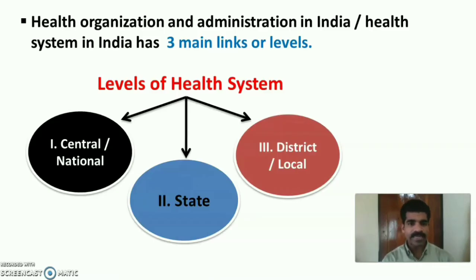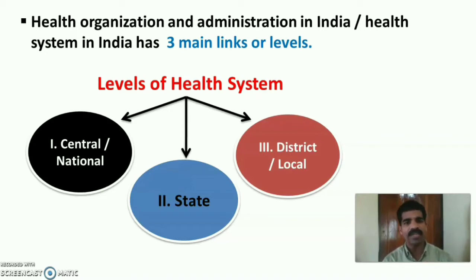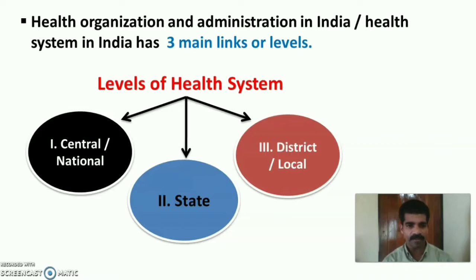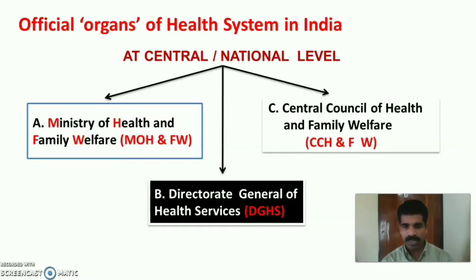Health Organization and Administration in India, or Health System in India, has three main links or three levels of health system. They are central or national level, state level, and district or local level.